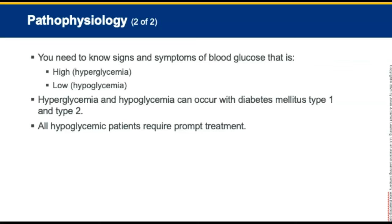Hyperglycemia and hypoglycemia can occur with both type 1 and type 2 diabetes. You will encounter many patients displaying signs and symptoms of high and low blood glucose levels. These conditions can be quite similar in their presentation — patients present with altered mental status and can often mimic alcohol intoxication. Intoxicated patients often have abnormal glucose levels as well. Hypoglycemia, or low blood sugar, can develop if a person takes medications but fails to eat enough food, or takes too much medication, resulting in low blood glucose levels. All hypoglycemic patients require prompt transport.